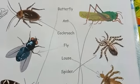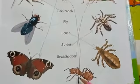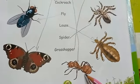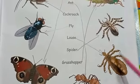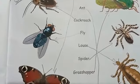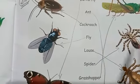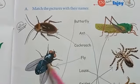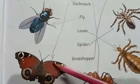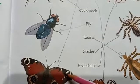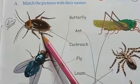Look at this — cockroach, butterfly, fly, ant. One, two, three, four, five, six — six legs! Most of the insects have six legs. Some insects have wings to fly — the fly, the grasshopper, the butterfly — they fly with their wings. Look at this cockroach: one, two, three, four, five, six legs.